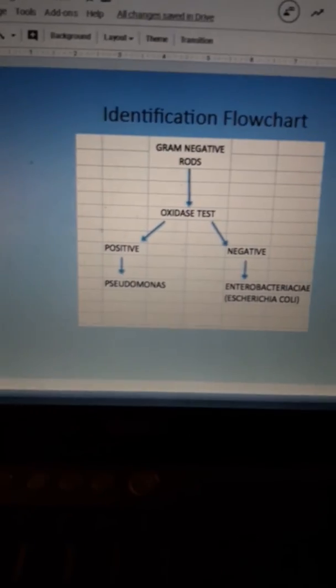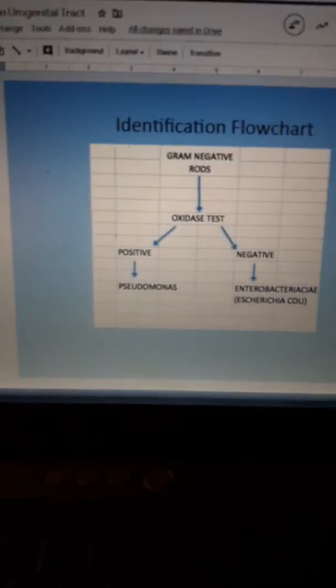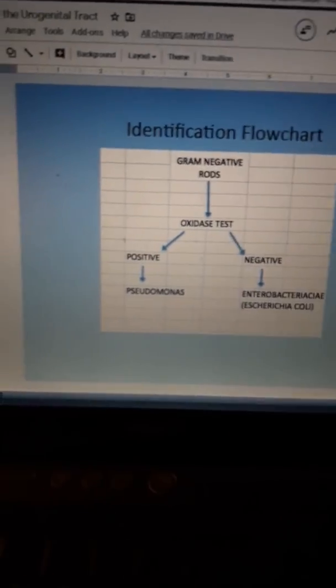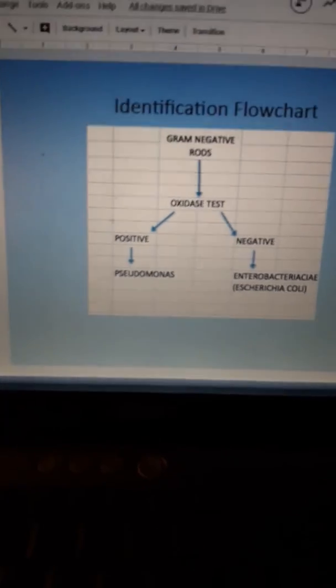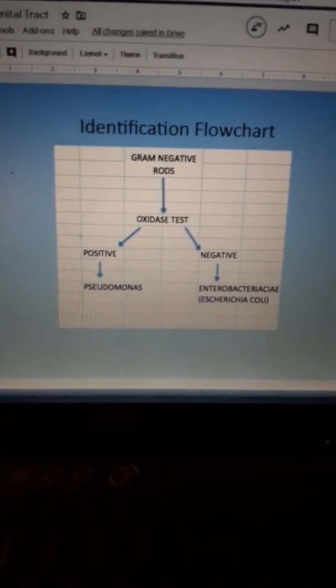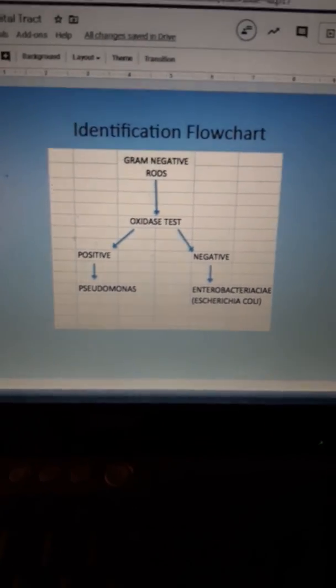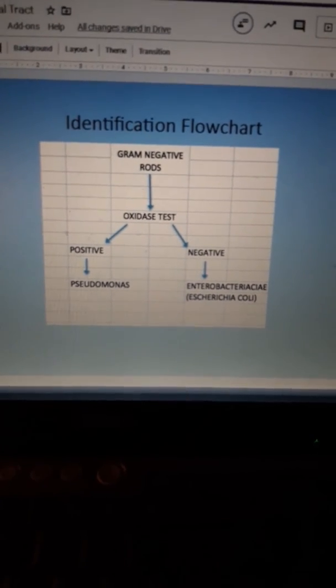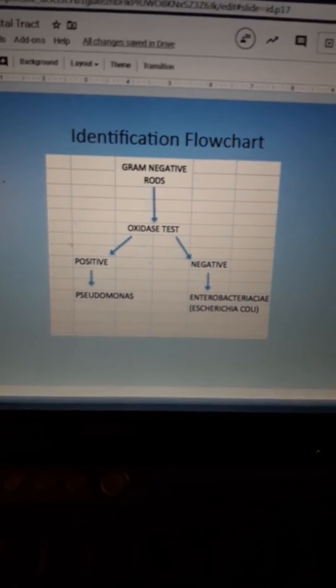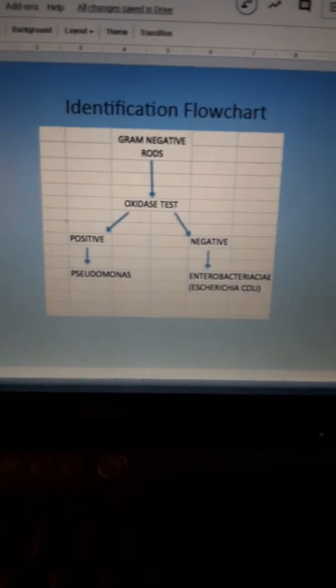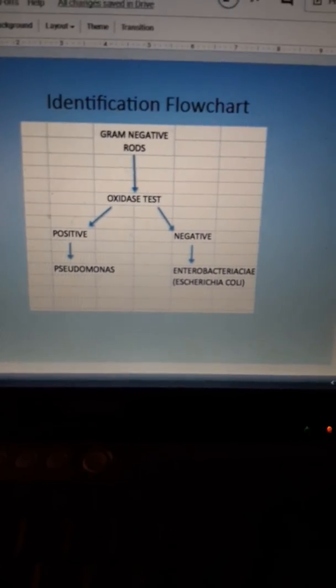If the oxidase test is negative, that means it's part of a huge family of gram-negative rods called Enterobacteriaceae. And the nickname is enterics, which you'll see in a few slides. But the one you already know about is E. coli.